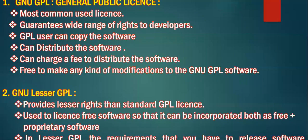Next comes Lesser GPL. From the name it is very clear - it provides less rights as compared to GPL. The main feature of Lesser GPL is that the free software, when used, can be incorporated both as free and proprietary software. Both can be incorporated. In Lesser GPL, the requirement that you have to release software extensions has been removed. Some restrictions have been removed, but rights are still less as compared to the original GPL.